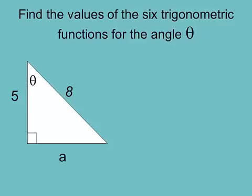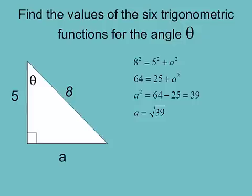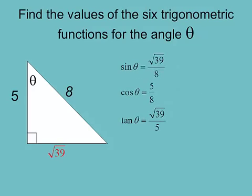Let's do another one. Side A is unknown and opposite theta. 8 is your hypotenuse and 5 is your adjacent side. Using the Pythagorean theorem to solve for A: 8² = 5² + A², and A equals the square root of 39. We'll leave that as square root of 39 to get the exact answer. Sine = √39/8, cosine = 5/8, tangent = √39/5.